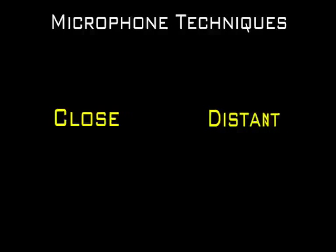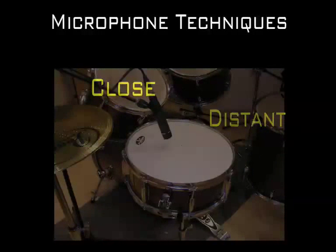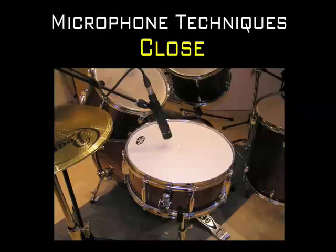Now let's talk about microphone techniques. There are two types of mic placement to capture a sound source: close and distant placement. In close micing, the instrument is positioned one inch to three feet from the transducer. This often produces a tight, present sound quality and is the best choice to exclude room ambience. Here's an example of an acoustic guitar recorded with close micing.